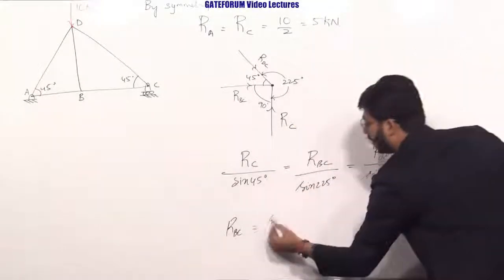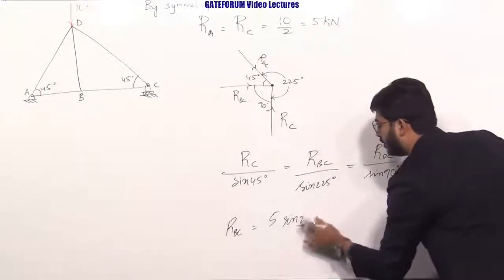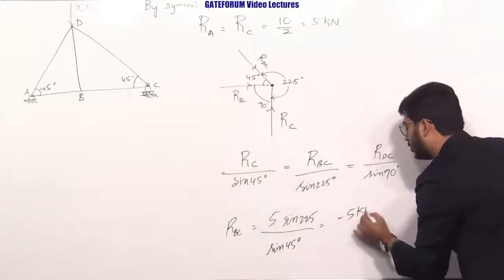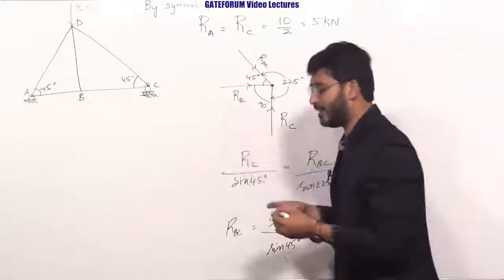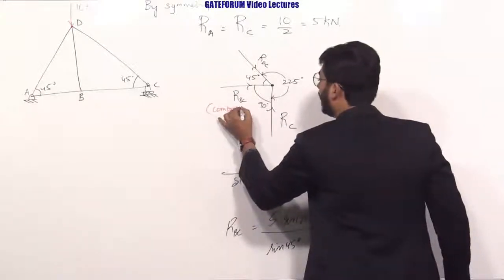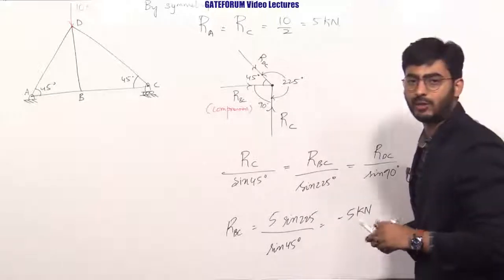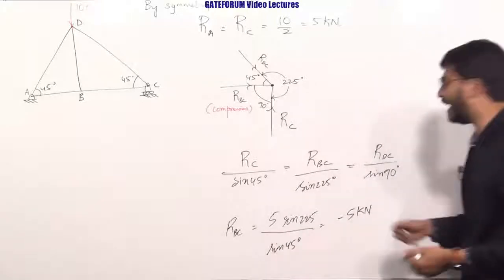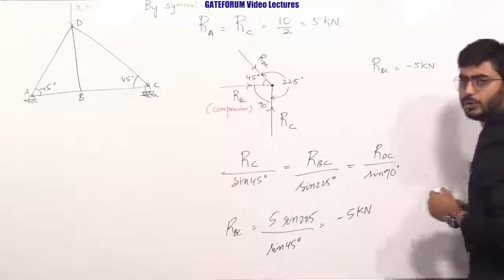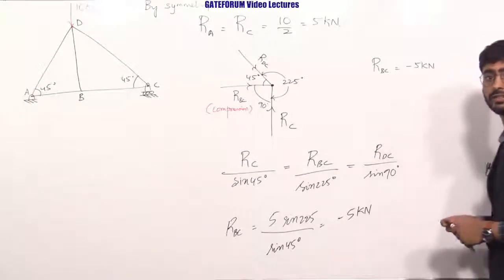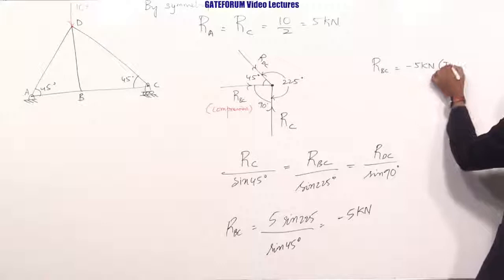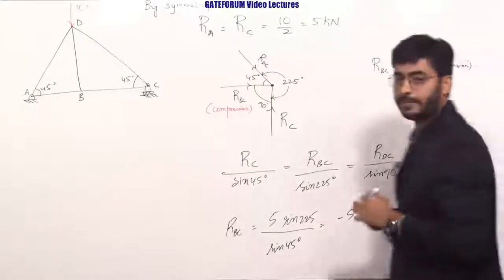Solving: R_BC = R_C × sin(225°)/sin(45°) = 5 × sin(225°)/sin(45°) = −5 kilo-newtons. The assumption was that R_BC is in compression, but since the result is negative, that assumption was false. Since only the magnitude is asked, R_BC = 5 kilo-newtons, and the direction is tension. This is the end of the answer.